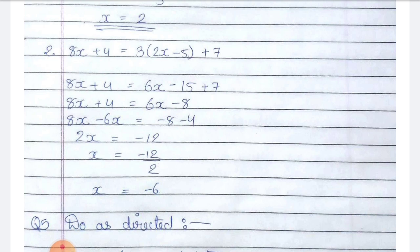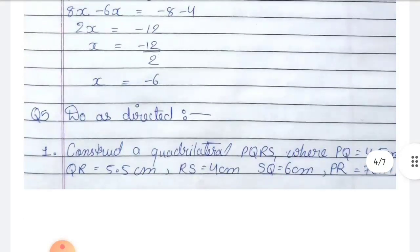Next question: do as directed — construct quadrilateral PQRS where PQ is equal to 4.5 cm, QR is equal to 5.5 cm, RS is equal to 4 cm, SQ is equal to 6 cm, and PR is equal to 7 cm.